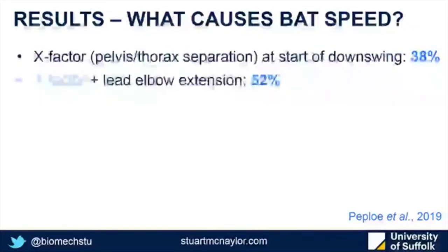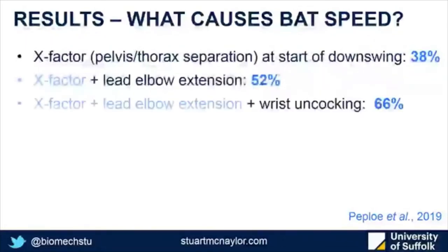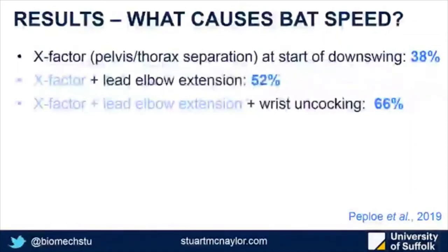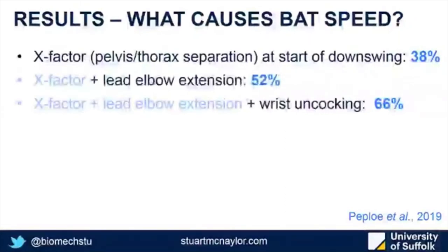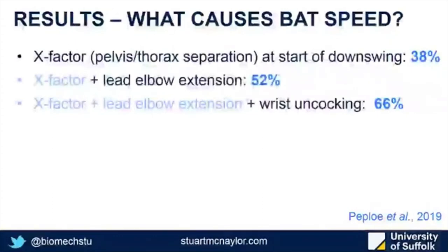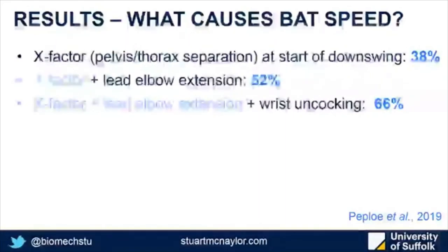The second most important parameter was how much they extended their lead elbow, and third was how much wrist uncocking occurred during the downswing. All three parameters together explain about two thirds of the variation in technique. With both the elbow and wrist, extending them maximises velocity and also maximises the length of the bat-arm system at impact, giving a greater range through which to accelerate the segment, increasing segmental and bat speeds.